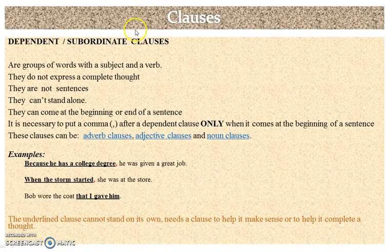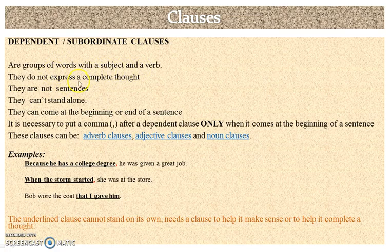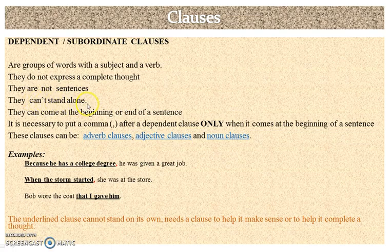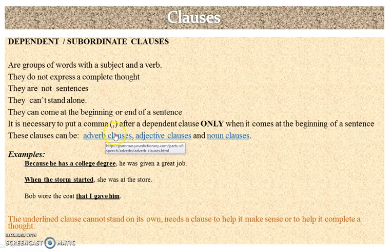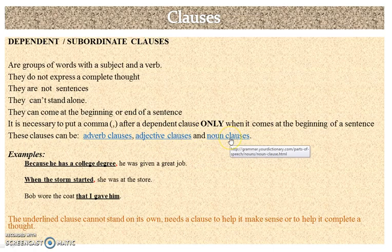Let's talk about dependent clauses. What are dependent clauses? They are groups of words with a subject and a verb, but they do not express a complete thought. They are not sentences — they can't stand alone. They can come at the beginning or at the end of a sentence. It is necessary to put a comma after a dependent clause only when it comes at the beginning of a sentence. These clauses can be adverb clauses, adjective clauses, and noun clauses.